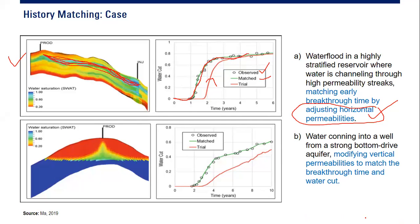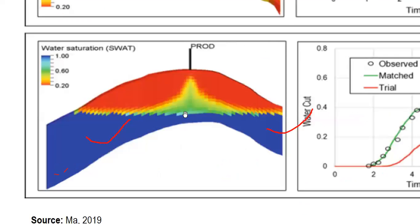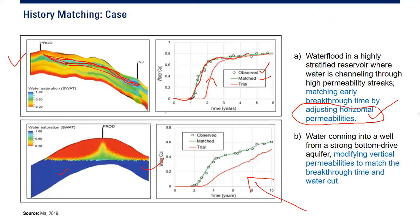The second case is water coning into a well from a strong bottom drive aquifer. You can see the water cut simulation trend — the red trial line doesn't match, but the green scenario is already matched. The simulator modifies the vertical permeability to match the breakthrough time and water cut — adjusting vertical permeability so water can move fast and create coning into the producer.